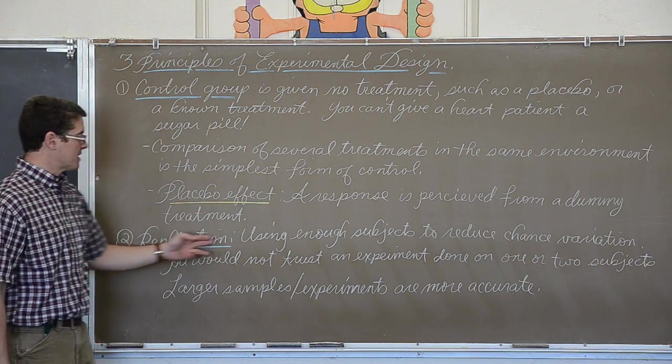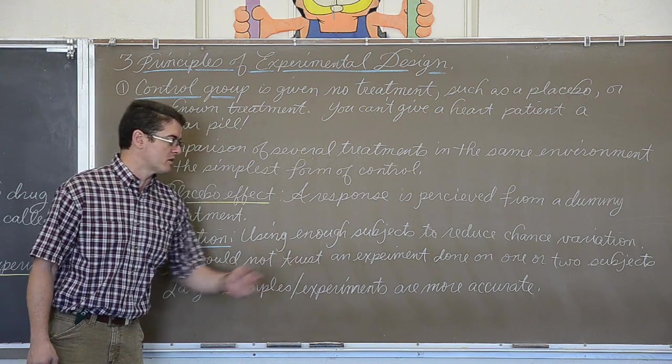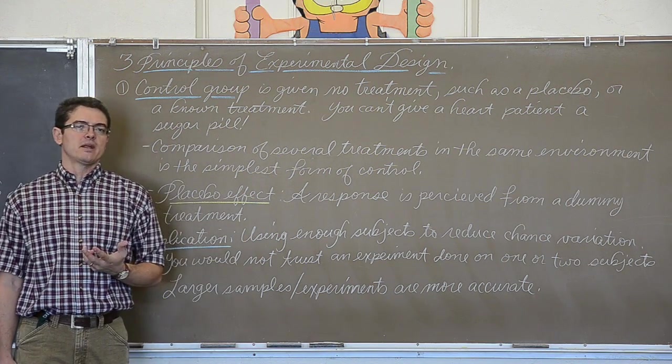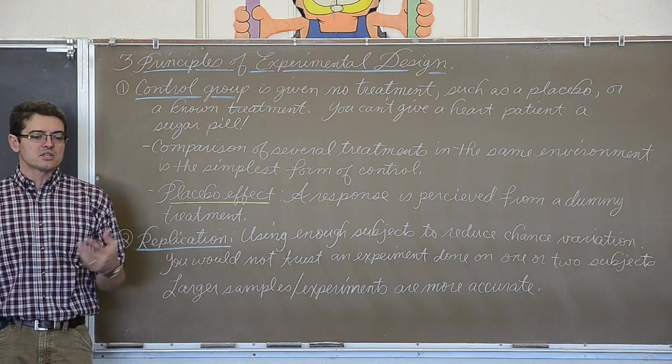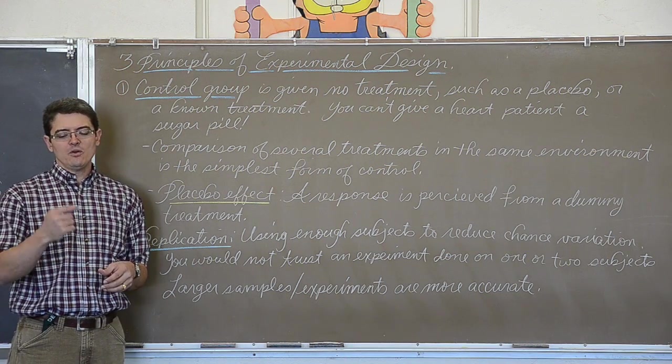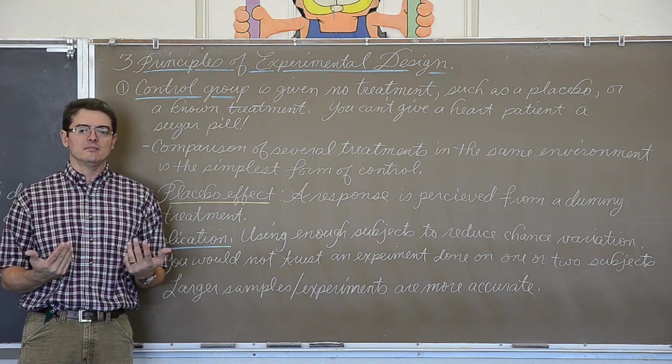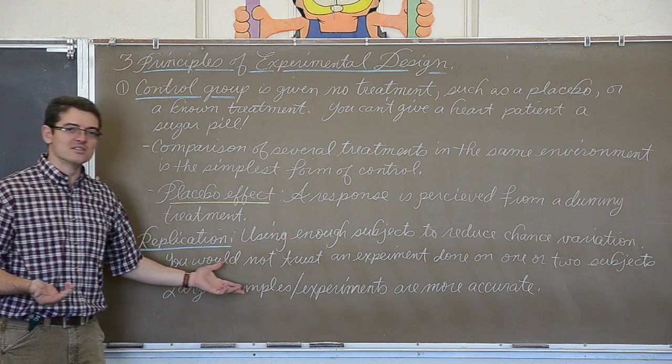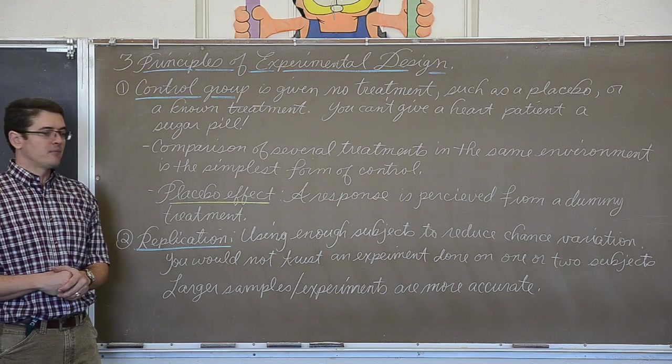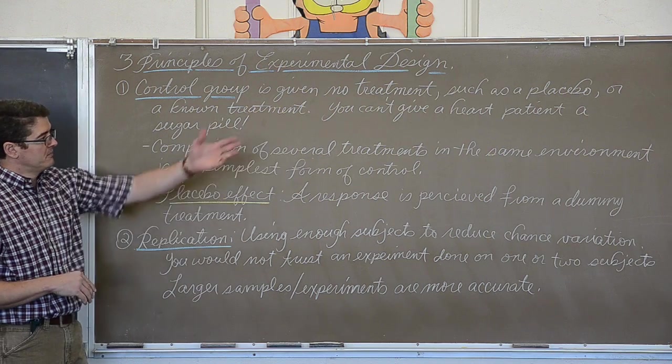The second principle of experimental design is replication. Using enough subjects to reduce chance variation. You would not trust an experiment done on one or two subjects. Larger samples, experiments, are more accurate. I would not trust a medical study that was only done on five individuals. Just like in a much simpler setting, if I give you a coin, if someone gave me a coin and said is this coin fair, I wouldn't flip it twice and get, oh I got heads twice so this coin is unfair. Head shows up 100% of the time. You only flipped it twice, you only did two trials. That is not large enough to be accurate. So you need replication, you need a good size sample in your experiment to have accurate results. I am going to shut a window before we move on to the next pane of notes.